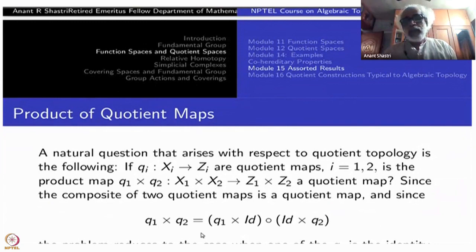We can decompose Q_1 × Q_2 as Q_1 × identity composed with identity × Q_2. This identity is first one, this one is identity of X_2. This is identity of Z_1.